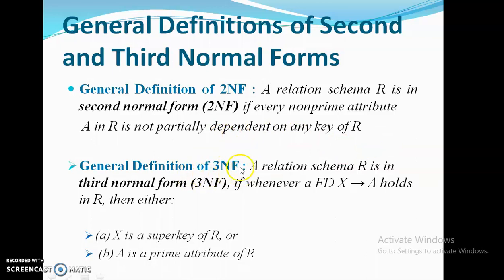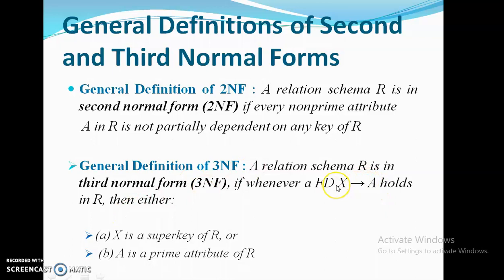For third normal form, you have to remember this: a relation schema R is in third normal form if whenever an FD X→A holds in R, then either X is a super key of R or A is a prime attribute of R. If that condition holds, we can say such a dependency is in 3NF.